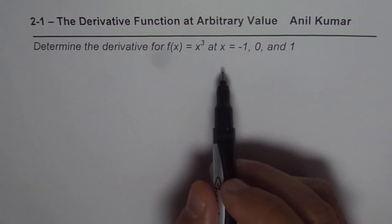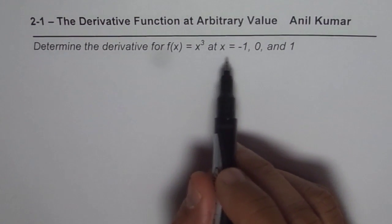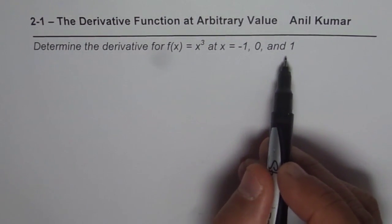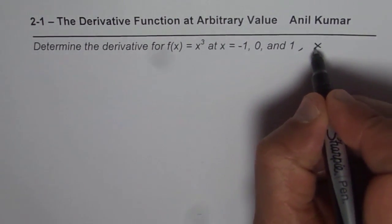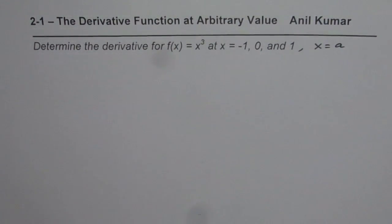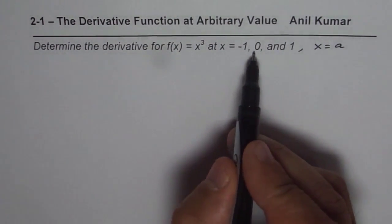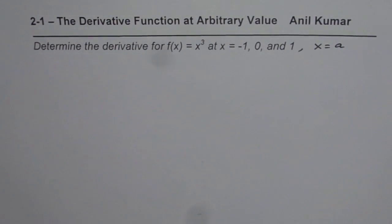So whenever you need to find derivative at more than one point, it is better to find it at a general point. So we will just find the derivative at x = a, and then substitute these different values of a and find specific derivative at each and every point. So that is the strategy.